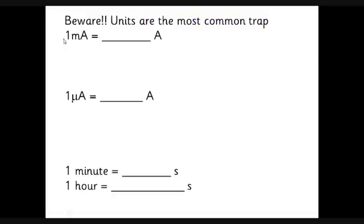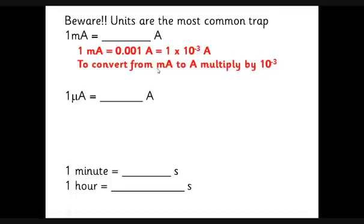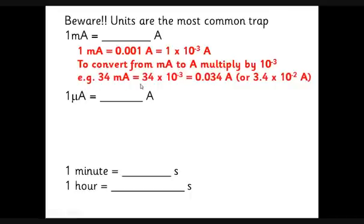Units are very important, so often we'll get a current in milliamps, and being able to convert milliamps into amps is crucial. You need to understand that one milliamp - milli means a thousandth - is 0.001 amp, or in standard form, 1 × 10⁻³ amps. To convert any number from milliamps to amps, multiply by 10⁻³. For example, 34 milliamps: 34 × 10⁻³ equals 0.034 or 3.4 × 10⁻² amps.